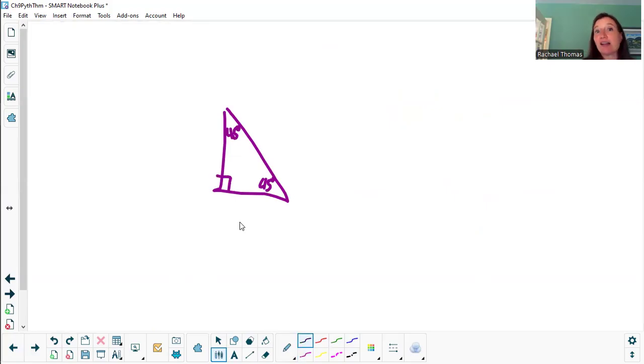The other leg is also 365, and the hypotenuse will be 365 times the square root of 2. And that's how we write it.